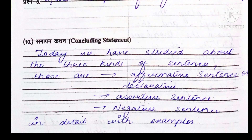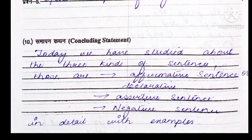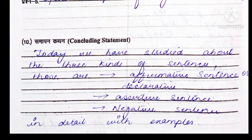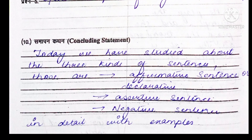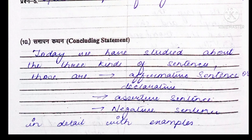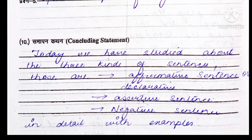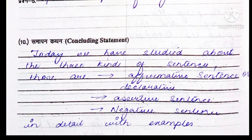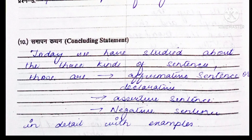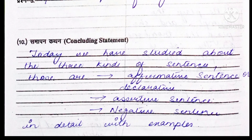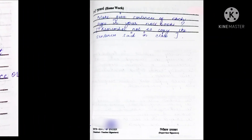After that, we will write the concluding statement: today we have studied about three types of sentences — affirmative, declarative/assertive, and negative — in detail with examples.